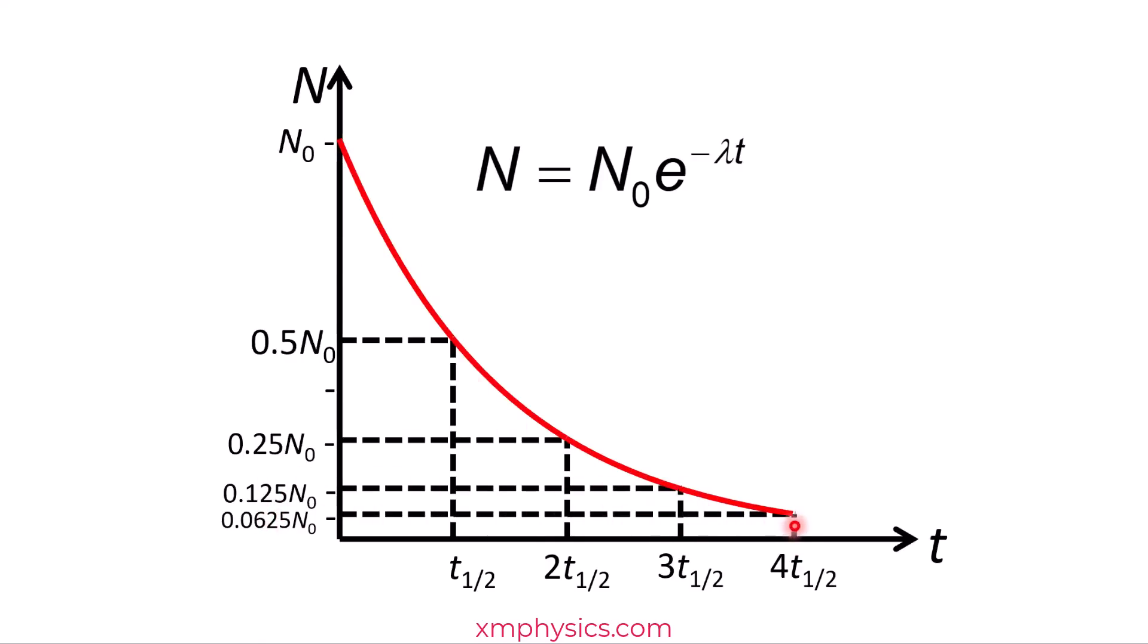So if you spot this pattern, you realize that instead of this equation, you can also write this equation. The number of undecayed nuclei is just the initial number times half to the power of number of half-lives.